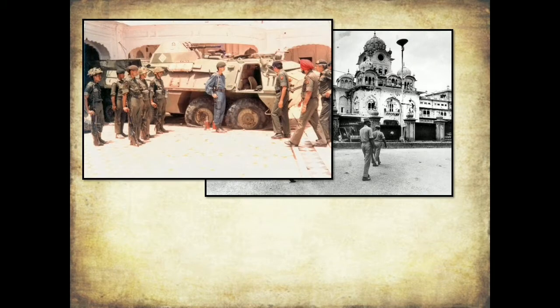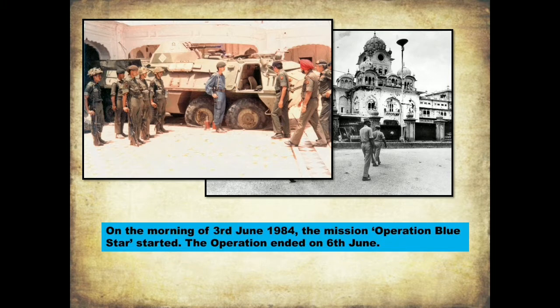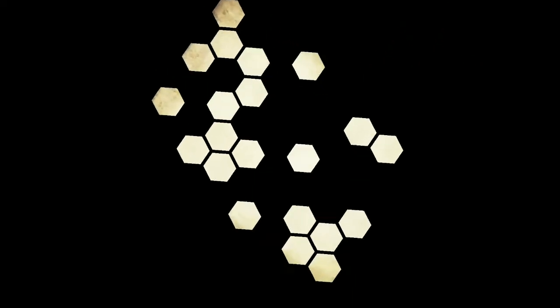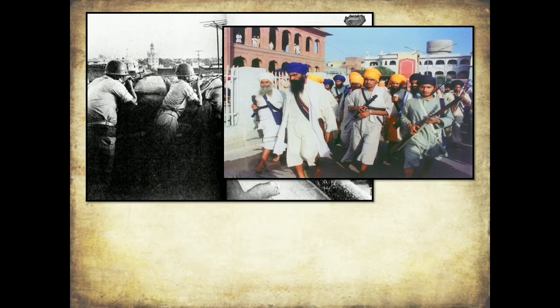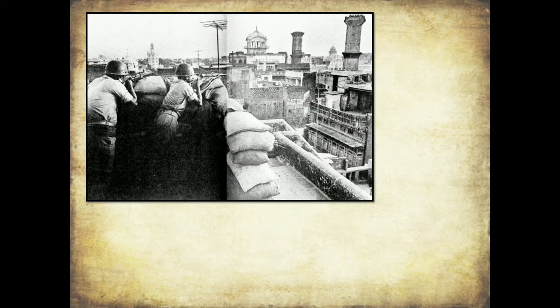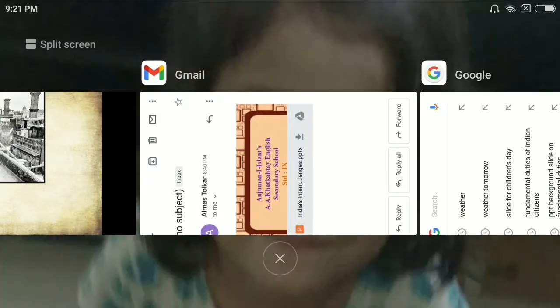On the morning of 3rd June 1984, the military mission Operation Blue Star began. The operation ended on 6th June 1984 — three very difficult days not only for General Kuldeep Singh Brar but also for the people of Punjab. The operation ended with the death of Bhindranwale and other terrorists, and Kuldeep Singh Brar successfully handled the situation.